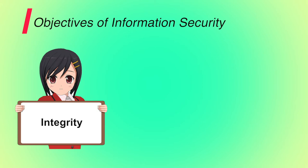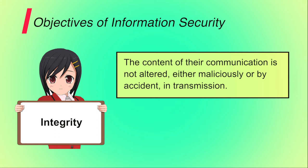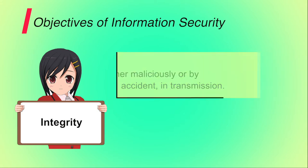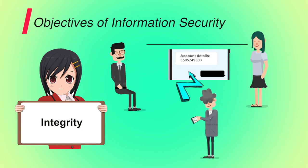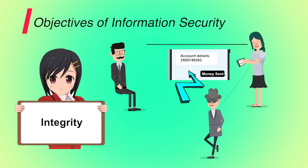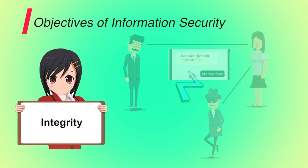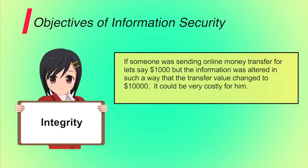Second is integrity. It involves protection against improper information modification or destruction. A loss of integrity is the unauthorized modification or destruction of information. For example, suppose you are sending your account number to your friend to transfer money into your account. If an attacker modifies the account number and places his account number in place of yours, then the integrity of the message breaks. If your friend receives the attacker's account number, he will send the money to the attacker's account, not yours. Also, if someone was sending an online money transfer for, say, $1,000, but the information was altered such that the transfer value changed to $10,000, it could be very costly. So the integrity of the message should be maintained for secure transmission.